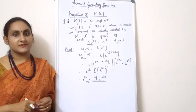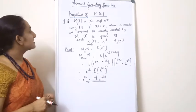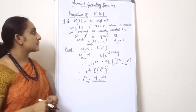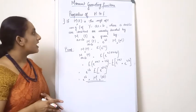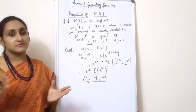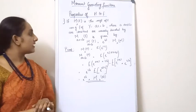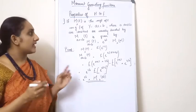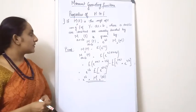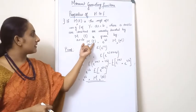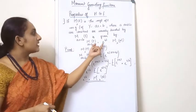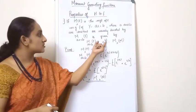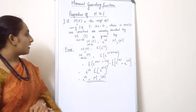Now we will look at the properties of the MGF. The first property is: if M_t(x) is the MGF of x, then the MGF of y where y equals ax plus b — with a and b being constants — is denoted M_t(ax+b), and it equals e raised to bt multiplied by M_t(ax).